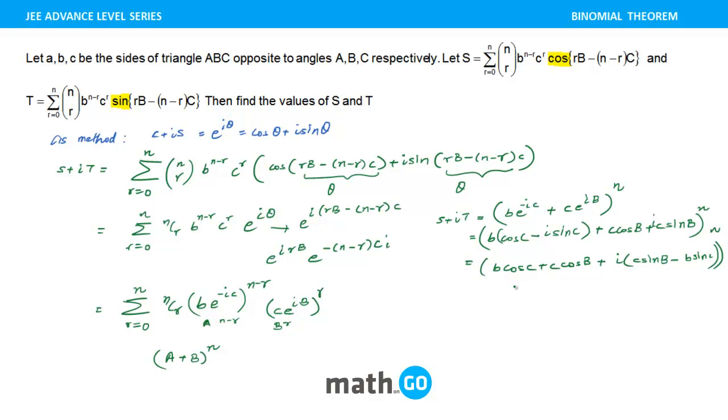So now can you see that there is a projection formula here? Yes, that is why I was saying that it is going to use too many formulas from different chapters. So B cos C plus C cos B is nothing but what you can say is A, right? We know this property very well.